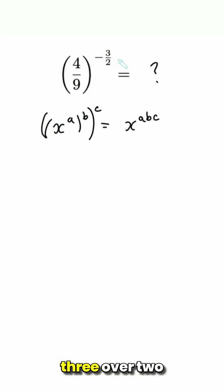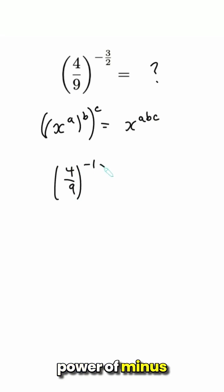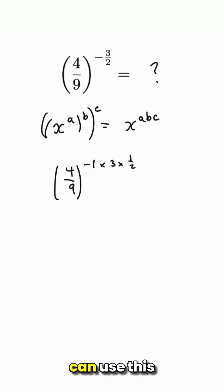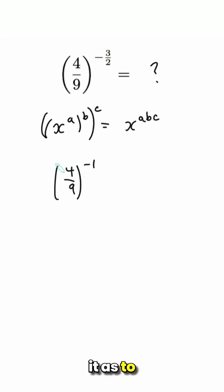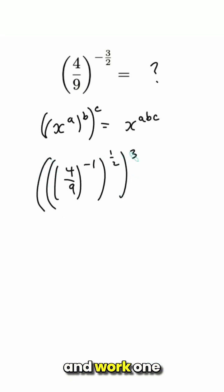We'll think of the minus 3 over 2 as a product of three values. So it's 4 ninths to the power of minus 1 times 3 times 1 half. And if we split that up in the right order, then we can use this rule. So let's write it as to the power of minus 1, to the power of half, to the power of 3, and work one layer at a time to sort it out.